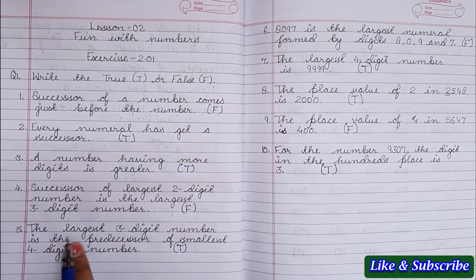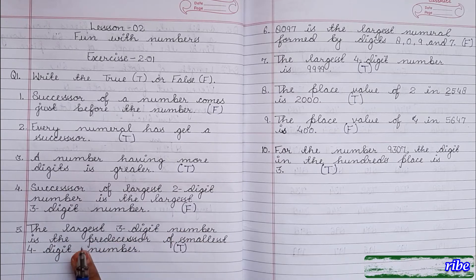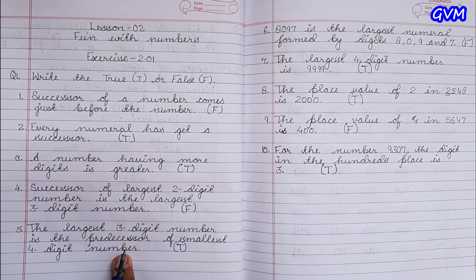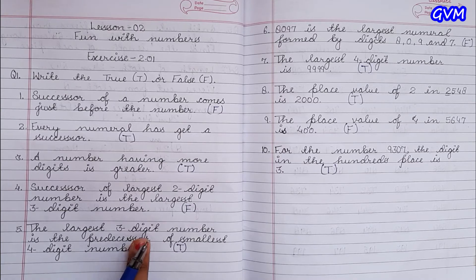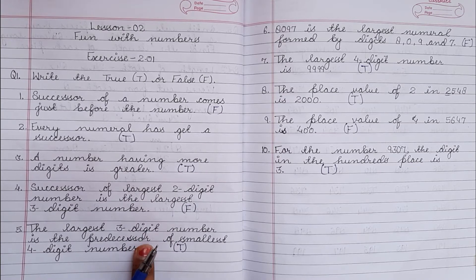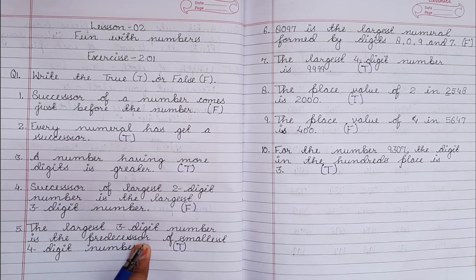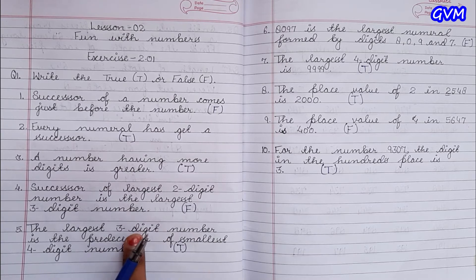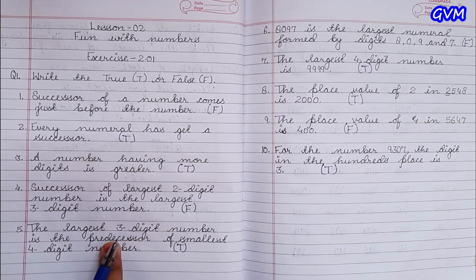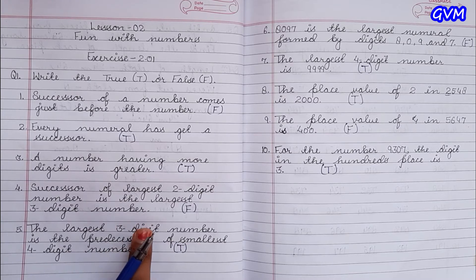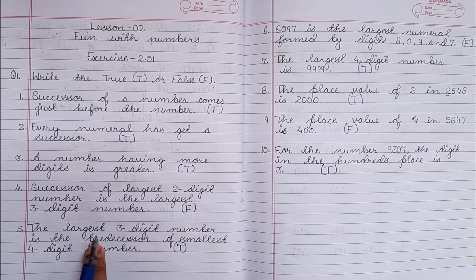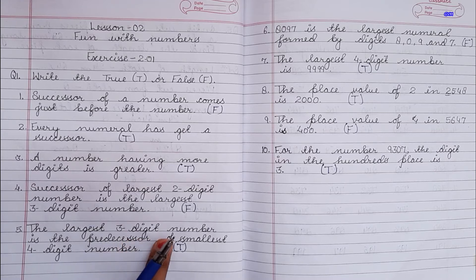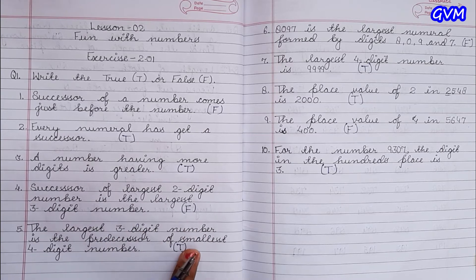Number five: 'The largest three-digit number is the predecessor of the smallest four-digit number.' Largest three-digit number hai nine hundred ninety-nine. Predecessor matlab just before wala number. Smallest four-digit number hai one thousand. One thousand ke just pahle kya hai? Nine hundred ninety-nine. Toh nine hundred ninety-nine kya hai? Predecessor hai one thousand ka — it's true.